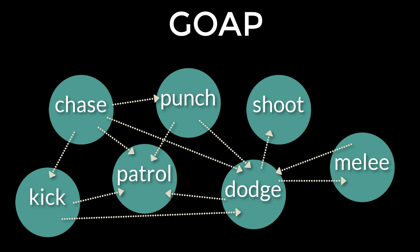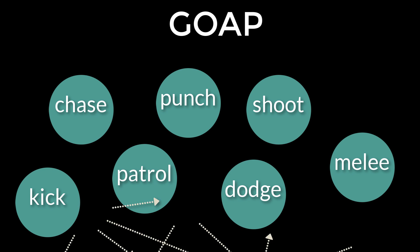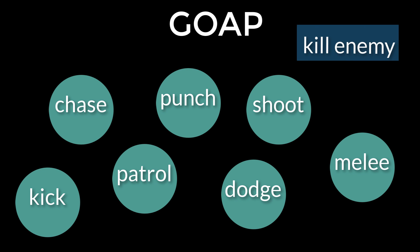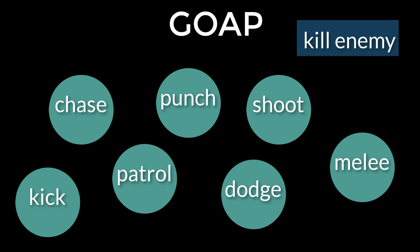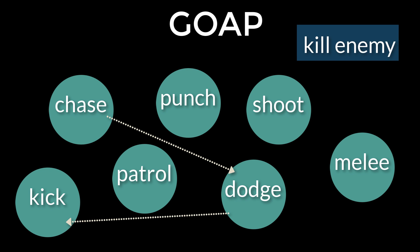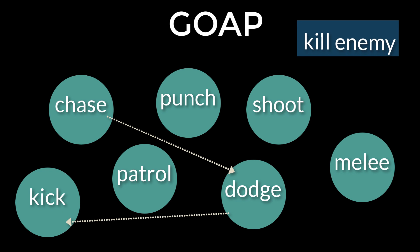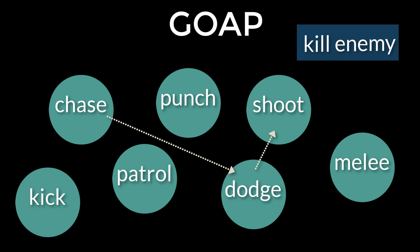Instead of a system with fixed links, in GOAP all the links are removed. When a goal is presented, an appropriate course of action can be chosen from all of the available tasks based on the state of the agent and the world. For example, if an agent were asked to kill an enemy and it didn't have a weapon, it could choose a physical fight. However, if it did have a weapon, a different set of actions would become available.